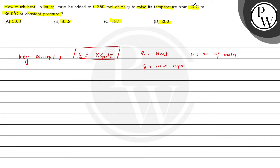heat capacity at constant pressure, and ΔT is equal to change in temperature.